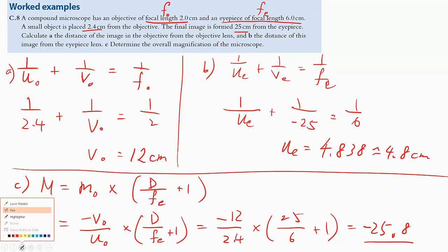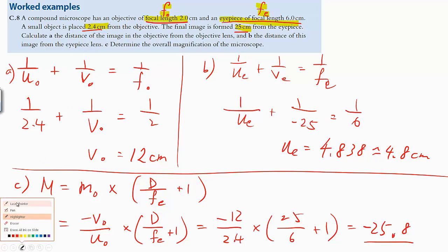Let's look at what we have in this question. We have the objective focal length F_O and the eyepiece focal length F_E. As you would normally approach a physics calculation question, you want to write down the variable symbols. So we have F_O, U_O, V_O, and V_E.